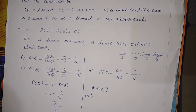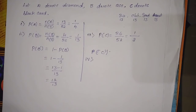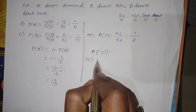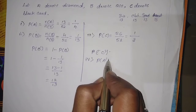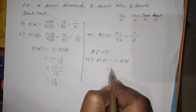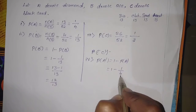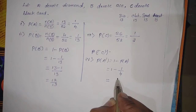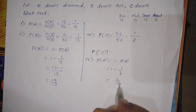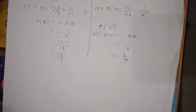The fourth question asks for not a diamond card. We already found P(A) = 1/4. So P(A') = 1 − P(A) = 1 − 1/4 = 3/4. This is the probability of not a diamond card.